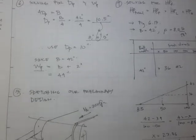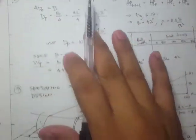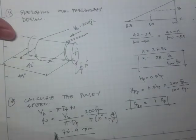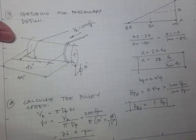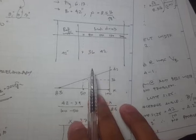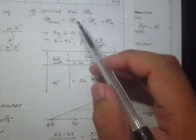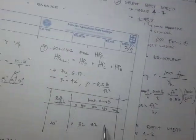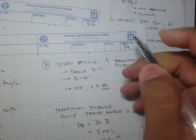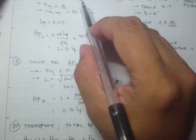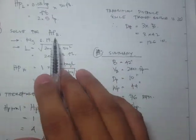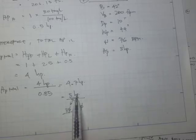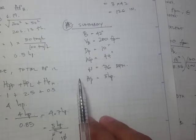Next, we solved for the diameter of the pulley, obtained the face width of the pulley, and calculated the rotational speed. After that, we solved for the total horsepower: first the frictional horsepower giving 1 HP, then the horsepower required to lift the material giving 2.5 HP, then HP horizontal giving 0.5 HP. The total divided by drive efficiency gives us our rated horsepower for the electric motor.